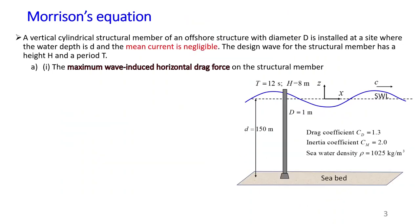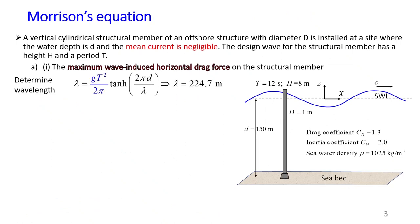To start the calculation, we always begin with calculating the wavelength. I use the full equation to calculate wavelength. You can see that lambda, which is wavelength, appears on both sides of this equation. To solve it, you need to use an iteration method. You can use the solver function in Excel or the solver on your calculator. If you would like me to show how to use the solver function in Excel, please let me know and I will make another video.